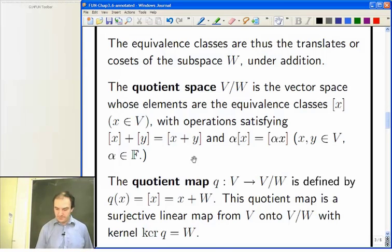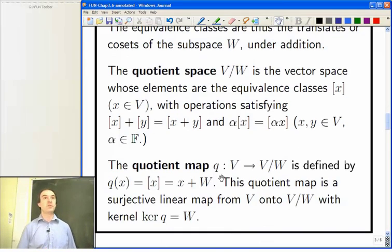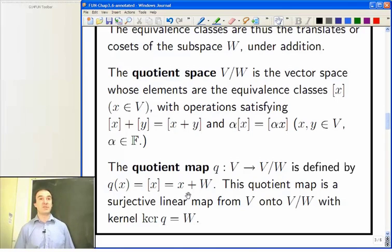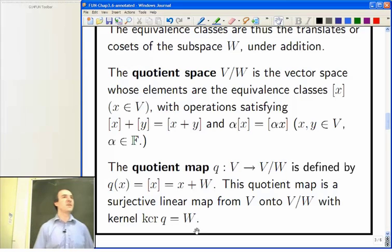Now, the quotient map is very useful. And this is something we'll use all the time later in this module. I'll usually call it q. Some people call it pi. It's a sort of projection because, of course, it does map onto everything in the quotient. It takes x to its equivalence class, which I'll write as x plus w most of the time. So it takes x to its translator of w. And that gives you a surjective linear map onto the quotient. And the kernel is just the thing you're quotienting out.